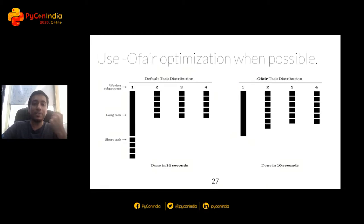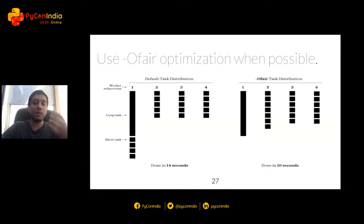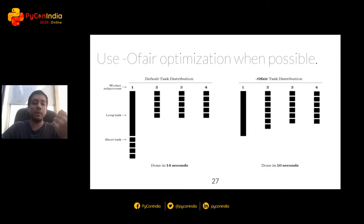Use of-fair optimization when possible. The default approach in Celery uses a round-robin approach to distribute tasks among distributed systems. If you have tasks that take varying amounts of time — either deliberately or due to unpredictable network conditions — this can cause unexpected delays and leave some workers idle while others are backed up. Using of-fair optimization distributes tasks according to the availability of workers instead. This option comes with a coordination cost penalty, but results in much more predictable behavior if your tasks have varying execution times, as most IO-bound tasks will.